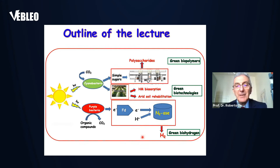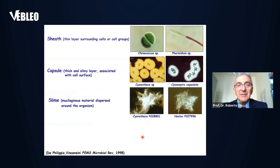Green biohydrogen by a very specific process based on the activity of the enzyme nitrogenase. Starting from the first topic, let me introduce some characteristics of the exopolysaccharide-producing cyanobacteria.